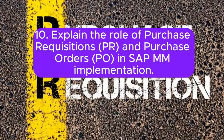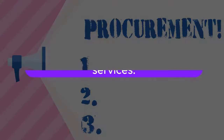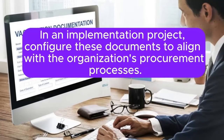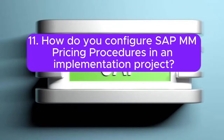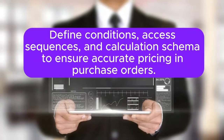Question 10: Explain the role of purchase requisitions (PR) and purchase orders (PO) in SAP MM implementation. Answer: PRs are created to initiate procurement, while POs are formal agreements to procure goods or services. In an implementation project, configure these documents to align with the organization's procurement processes. Question 11: How do you configure SAP MM pricing procedures in an implementation project? Answer: Use transaction code M/08 to configure pricing procedures. Define conditions, access sequences, and calculation schema to ensure accurate pricing in purchase orders.